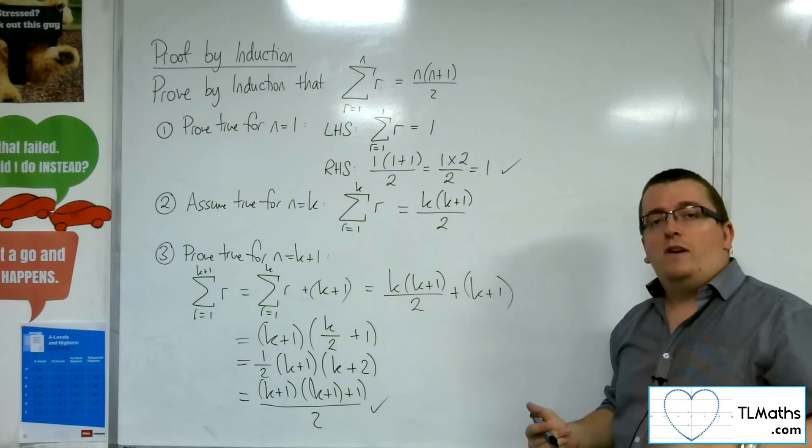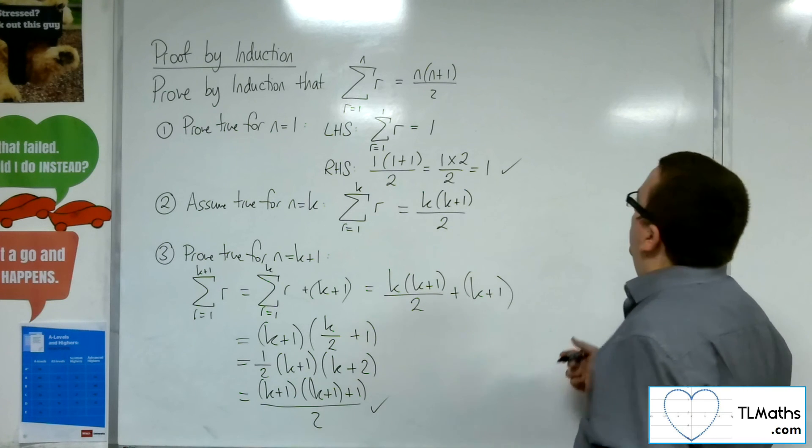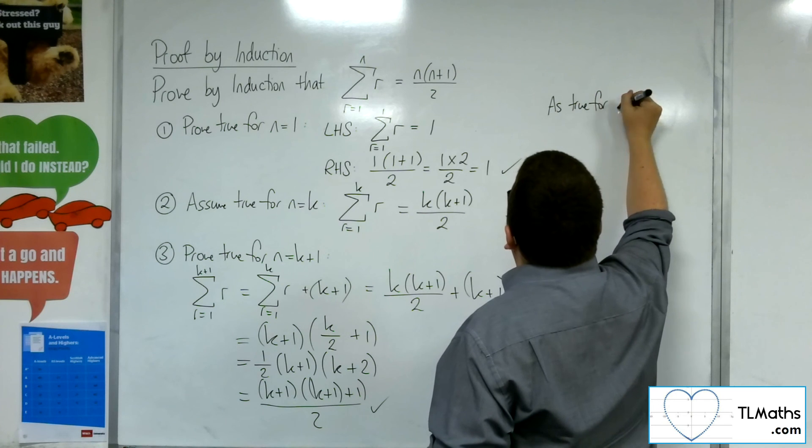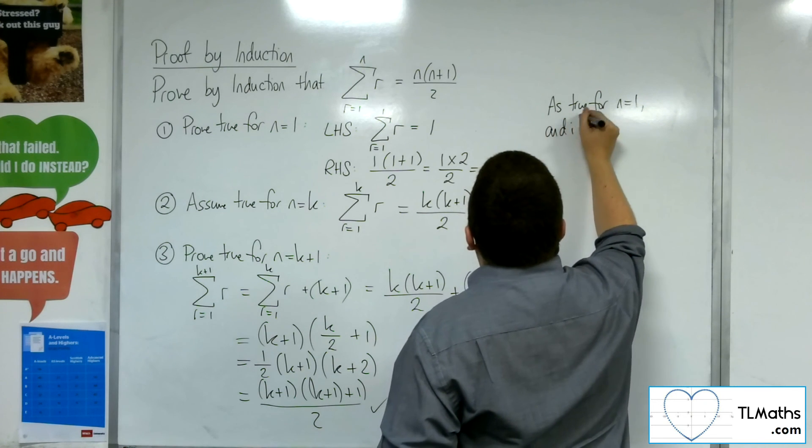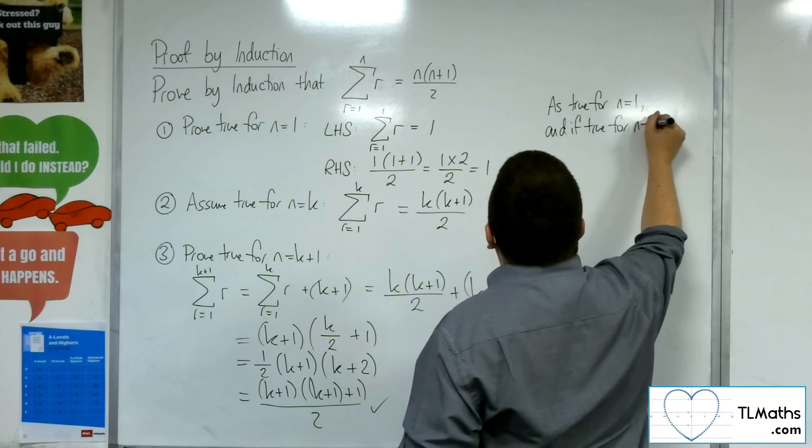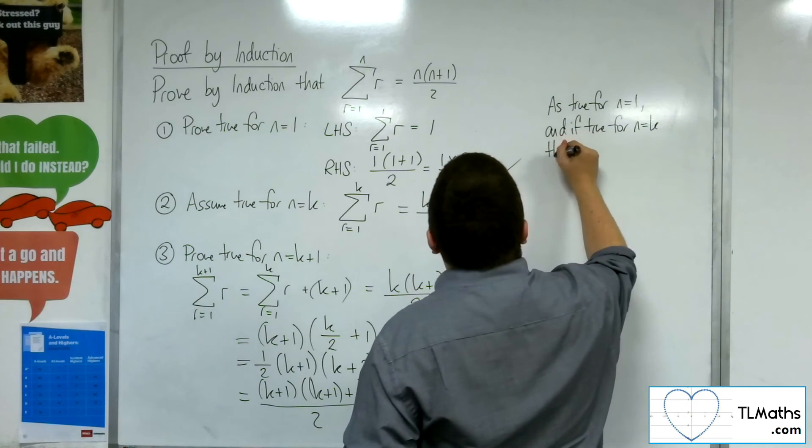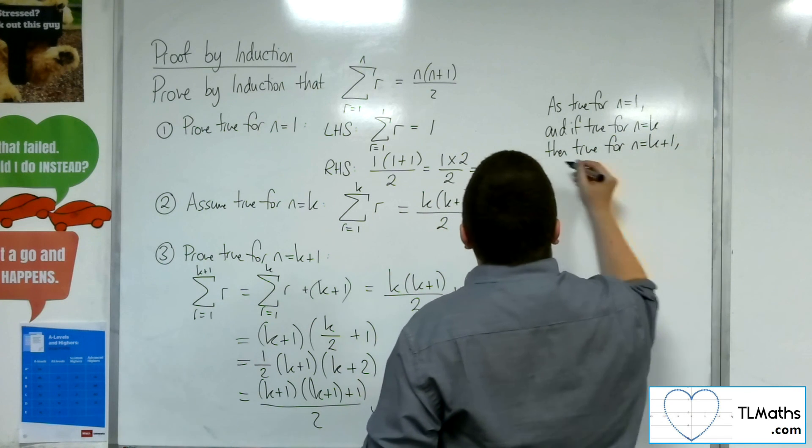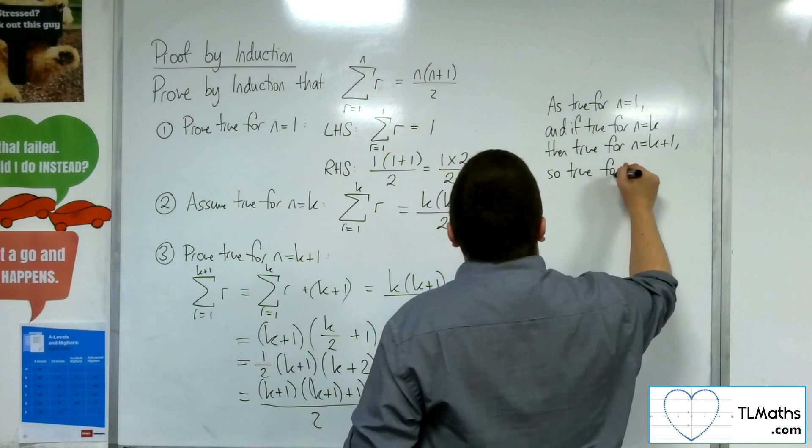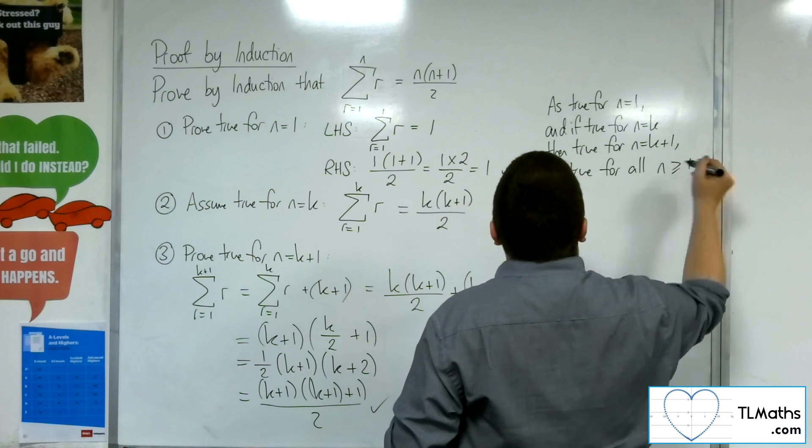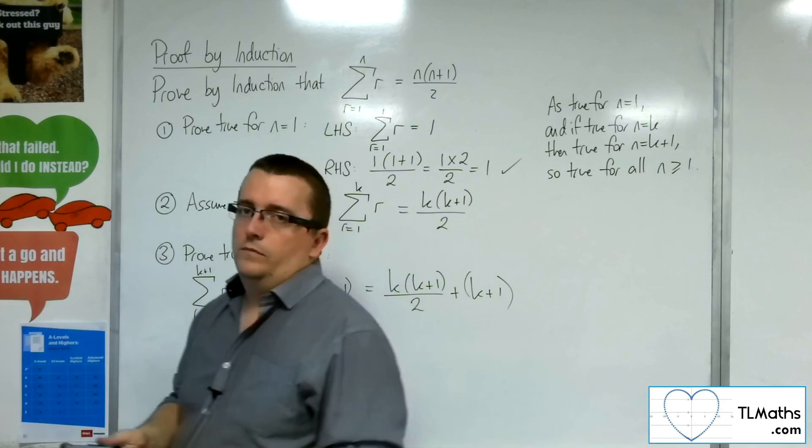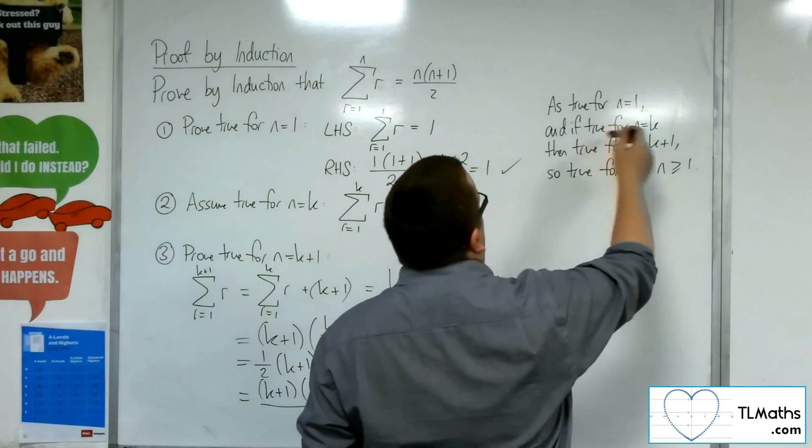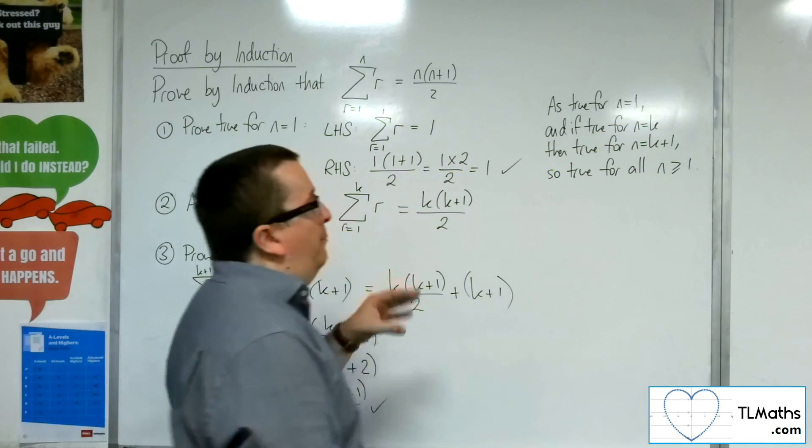And so we must now write down our concluding statement. So as true for n equals 1, and if true for n equals k, then true for n equals k plus 1. So true for all n greater than or equal to 1. That's our concluding statement, making sure that we've got the correct if and then to support the argument.